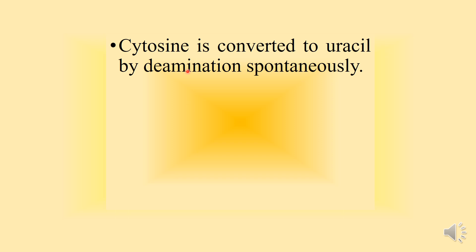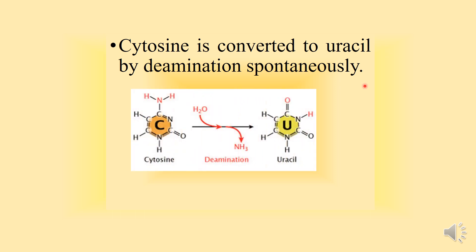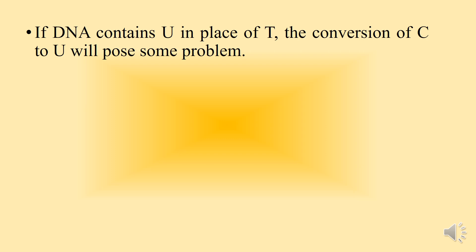The answer is that cytosine is spontaneously converted to uracil by deamination — removal of an amine group. If DNA contained uracil in place of thymine, this conversion of cytosine to uracil would pose a serious problem.